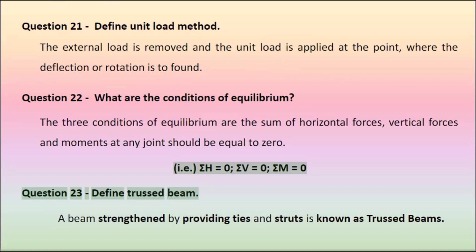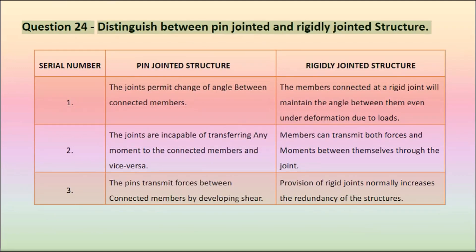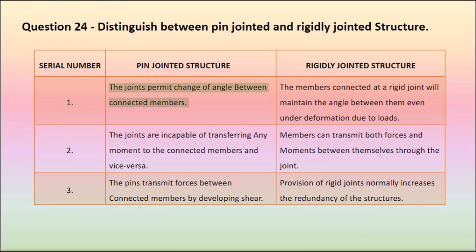Question 23: Define truss beam. A beam strengthened by providing ties and struts is known as a truss beam. Question 24: Distinguish between pin-jointed and rigidly-jointed structures. 1. In pin-jointed structures, the joints permit change of angle between connected members. In rigidly-jointed structures, the members connected at a rigid joint will maintain the angle between them even under deformation due to loads.